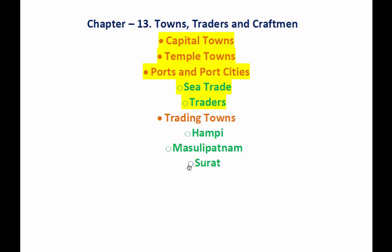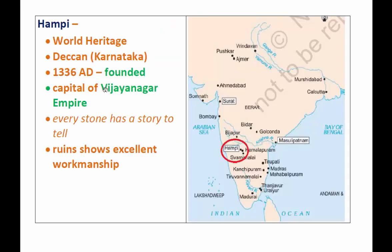Let's begin with Hampi. Hampi is a World Heritage site at present, located in the Deccan, in the state of Karnataka. In 1336 AD the city of Hampi was founded, and it was also the capital of the Vijayanagar Empire, which we have already discussed in preceding classes.